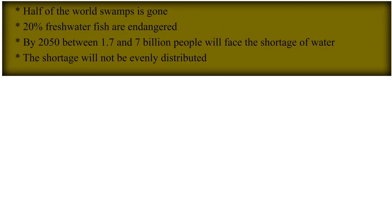Half of the world's swamps are gone, and 20% of freshwater fish are endangered. By 2050, between 1.7 and 7 billion people will face a shortage of water, and the shortage will not be evenly distributed.